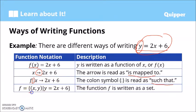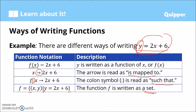Another way of writing is using braces, where the function f is written as a set. This is read as: f is the set of ordered pairs (x, y) such that y is equal to 2x plus 6. Note that the vertical line is also read as 'such that,' just like the colon. Take note: we say 'is equal to' or 'equals' — not 'is equals to.' Walang 's' yung equals.